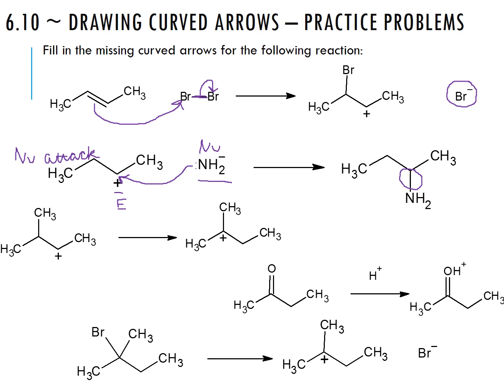In the next one we have a secondary carbocation, and on the product side we have a tertiary carbocation. Because that's the only change, we must have had a carbocation shift. Filling in the hydrogen, we had a hydride shift: drawing the arrow from that bond to the carbocation and showing where the hydrogen went. This would be our hydride shift.